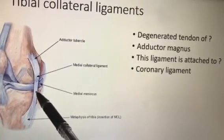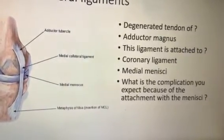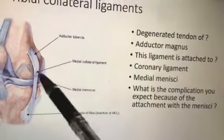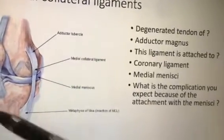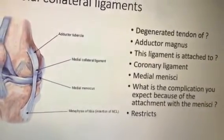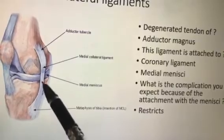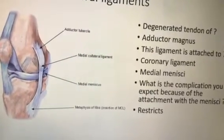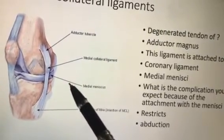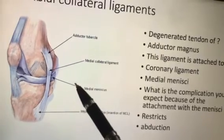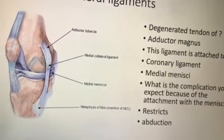The tibial collateral ligament is attached to the medial meniscus and the coronary ligament, making it very tight. Because of this tight attachment, the medial meniscus is more prone to injury. This ligament restricts abduction — since it is on the medial side, excessive abduction is restricted. If the ligament is torn, abnormal abduction will occur.